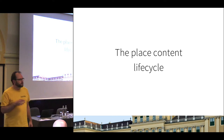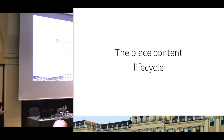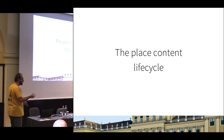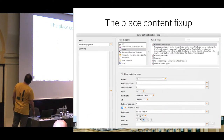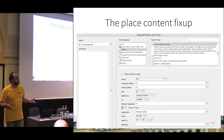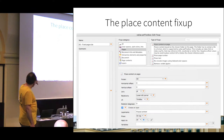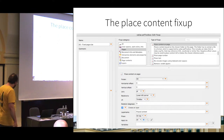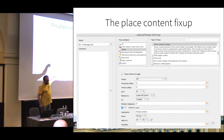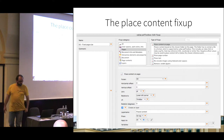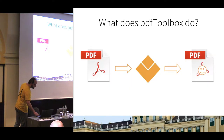The placed content lifecycle is difficult to explain because there's a lot going on. It's important to understand what PDF Toolbox does and in what order. First, you have to create a placed content fix-up — you select fix-up, set up all the parameters, and one of the key things is the HTML template you select. But what actually happens when you run that?